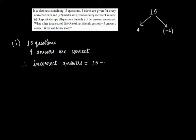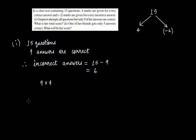Therefore, the incorrect ones will be 15 minus 9, that is 6 answers were incorrect. For every correct answer she will be awarded 4 marks, so she attempted nine questions correctly. For one correct answer she gets 4 marks, and since she attempted nine questions correctly, that will be 9 times 4.